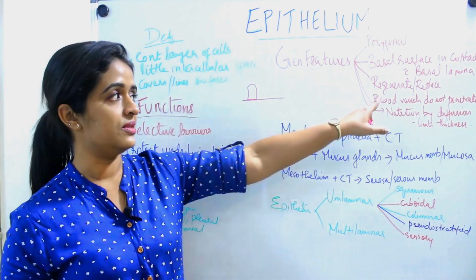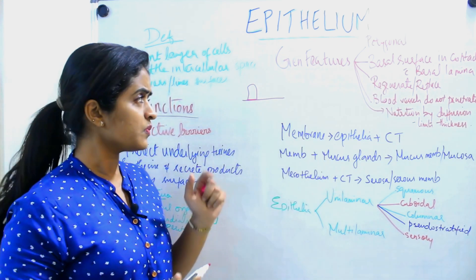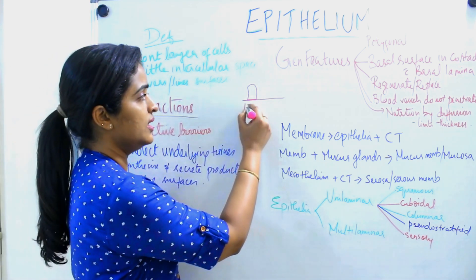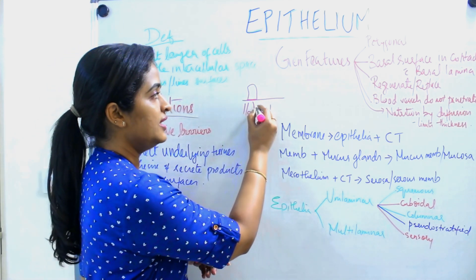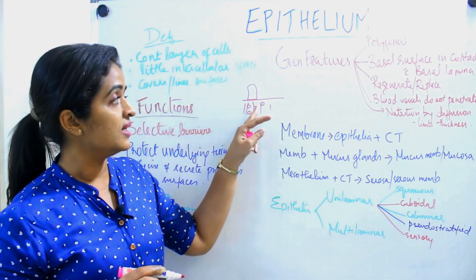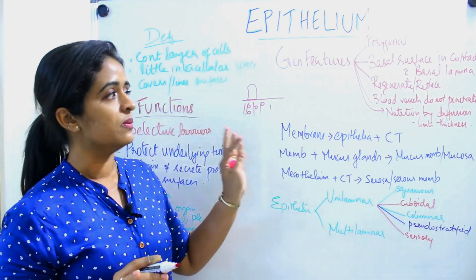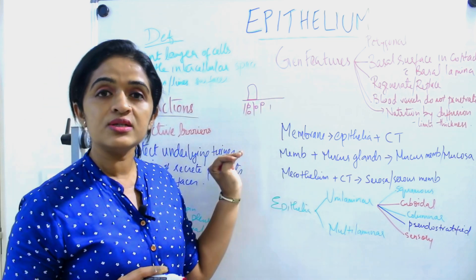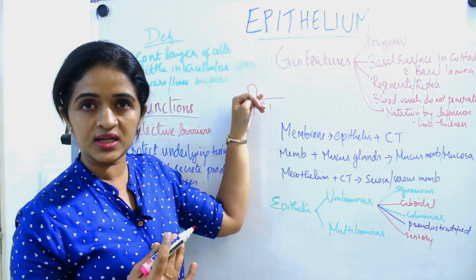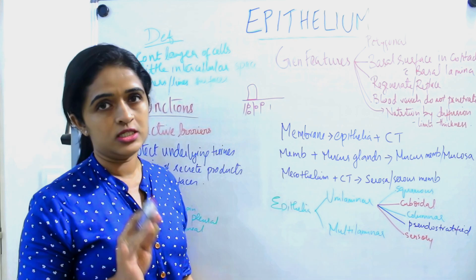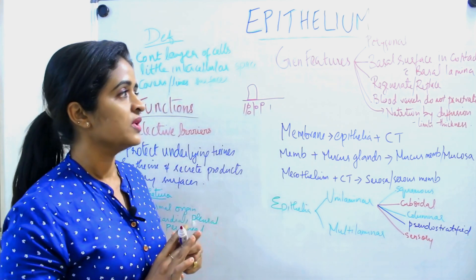Another general feature: when you talk about blood vessels, below the basement membrane you have the connective tissue supporting the epithelia. In this connective tissue you have blood vessels, but these blood vessels won't penetrate into the epithelial cells. So how does nutrition reach the epithelium? It is just by diffusion — the nutrition will diffuse into the cells. The blood vessels won't penetrate into the cells, so if you cut one epithelial cell you won't find any blood vessels in it.